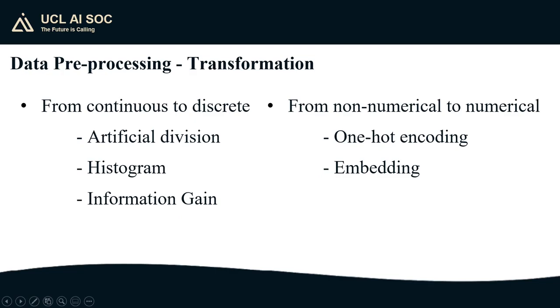I may sometimes have a model that I think would be a great fit for my data, but it requires that my data is in a different shape to what I have. For example, if my model requires discrete data, whereas I have continuous data, I can perform artificial division on this data or find a histogram of it in order to impose artificial buckets where my continuous values fall in.